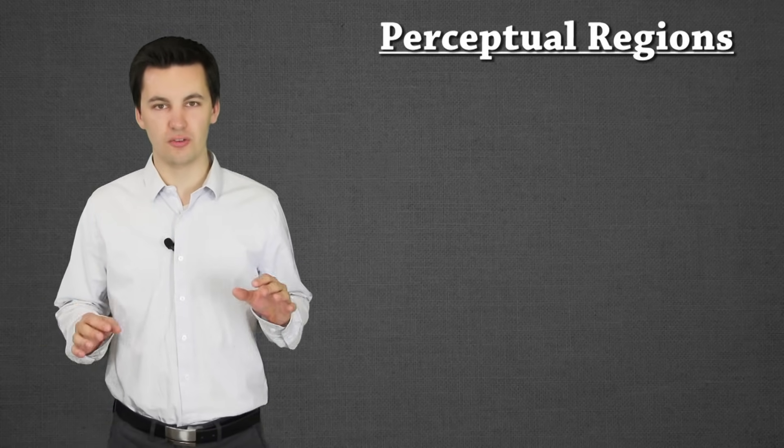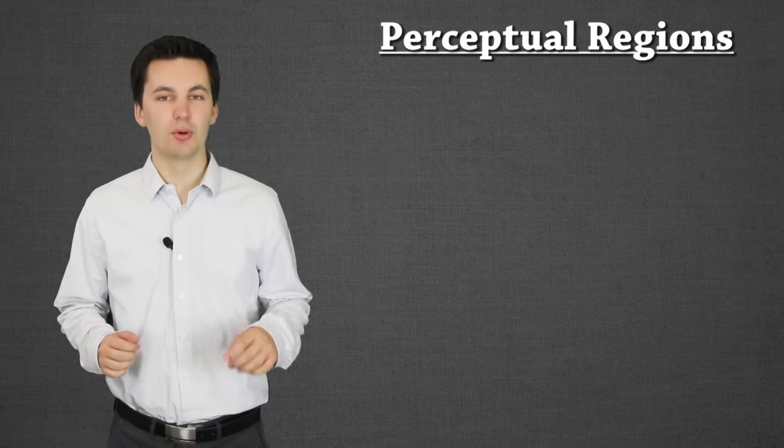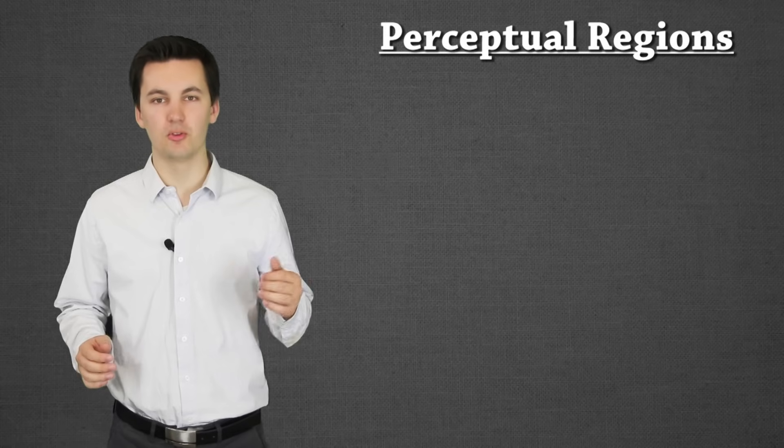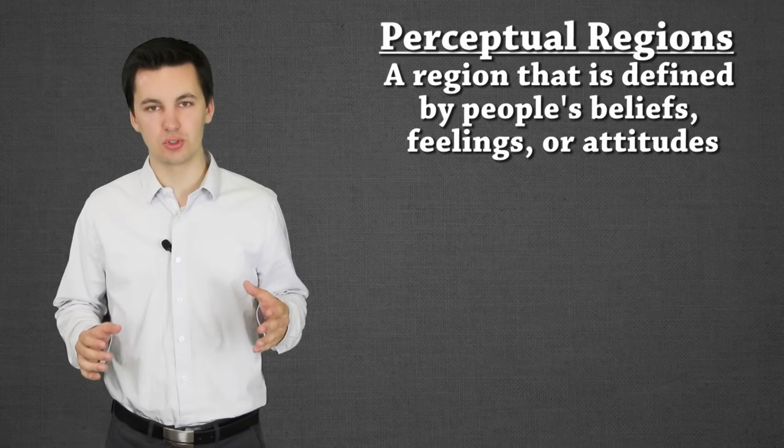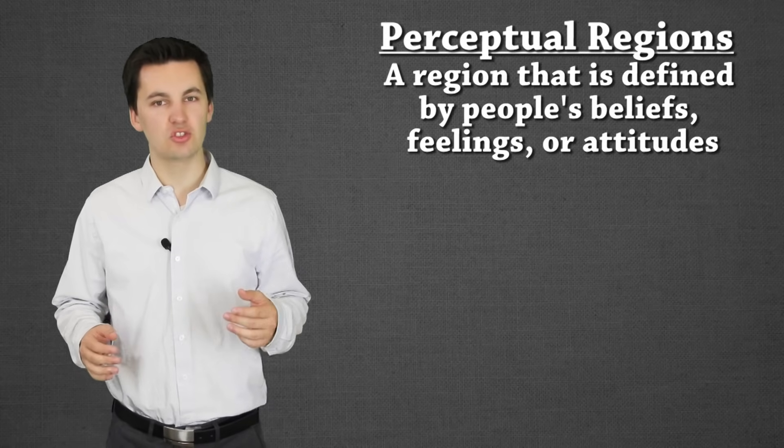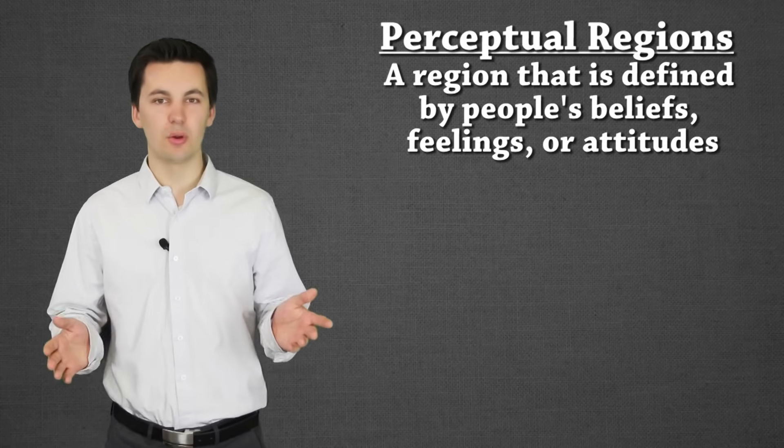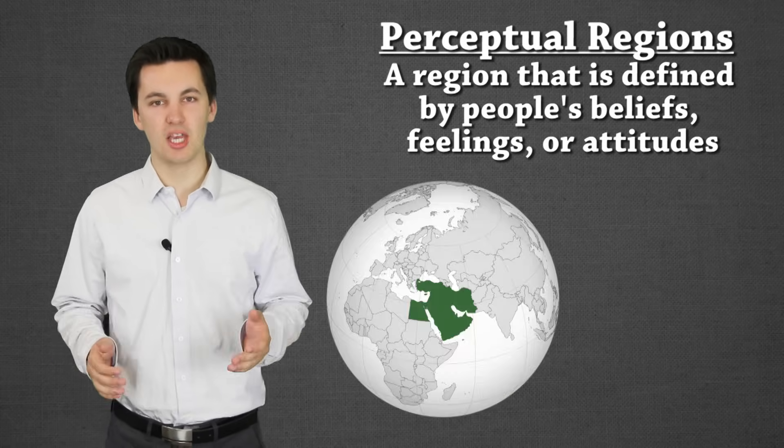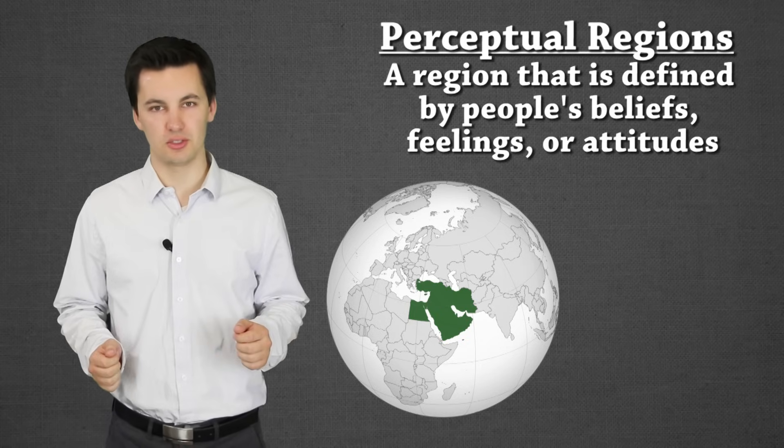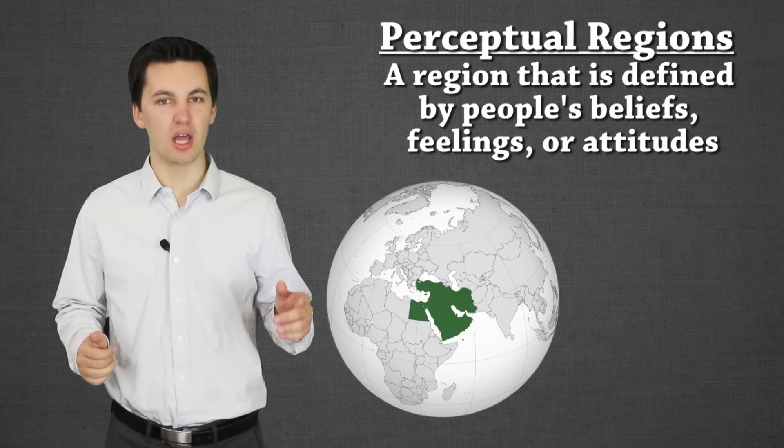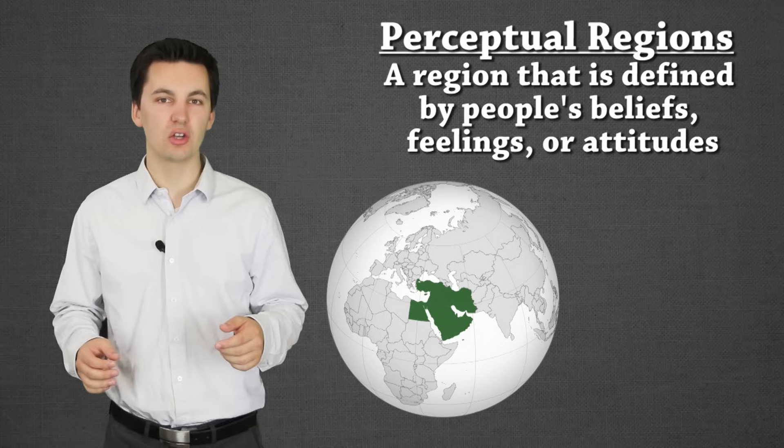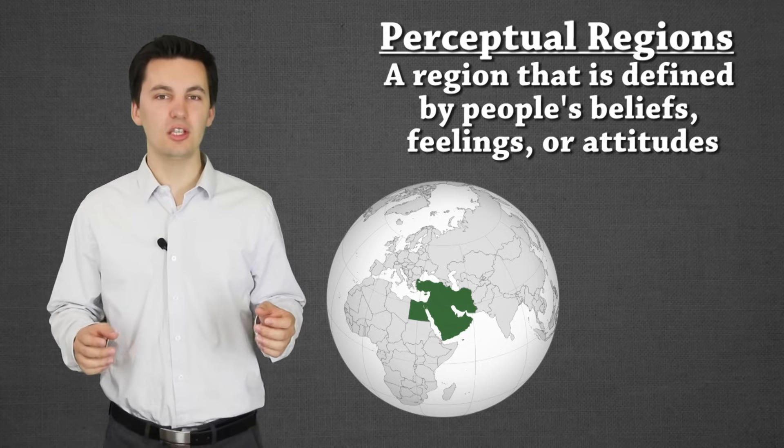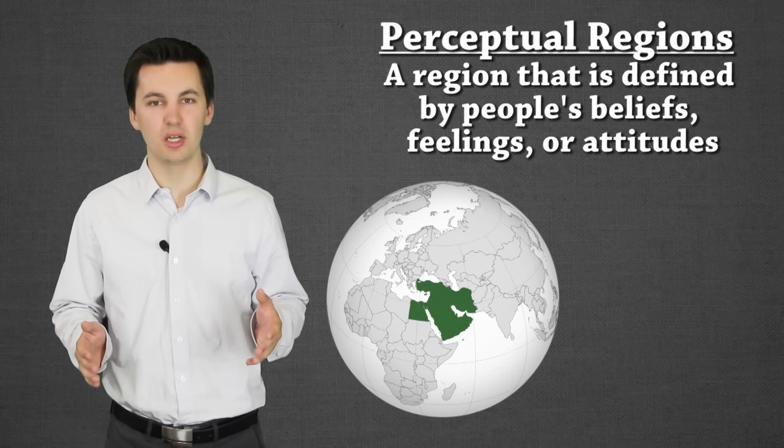Now our last type of region is perceptual regions. Now these are a little bit harder to just define because there is no perfect definition. Perceptual regions are regions that exist because of people's beliefs, attitudes, their feelings. All these different things create perceptual regions. So a perceptual region will change depending on who you're talking to. I'll give some examples so it makes a little bit more sense. But the Middle East is a perfect example. What countries are in the Middle East? Think about it. If you talk to your friend or someone else, they'll probably say some countries that are not, according to you at least, in the Middle East. Or maybe you have countries that they don't consider part of the Middle East. The Middle East, we all know what it means, but what exactly is the Middle East?